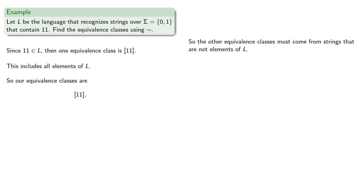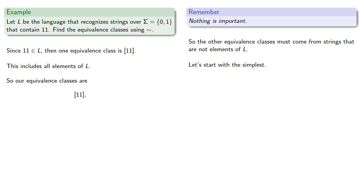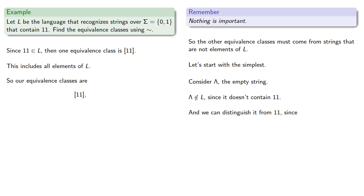So the other equivalence classes must come from strings that are not elements of L. Let's start with the simplest — the empty string. The empty string is definitely not in our language because it doesn't contain 11. And we can distinguish it from 11 because if we append the empty string, we still have something not in the language, but 11 concatenated with empty is in the language. So there's an equivalence class generated by the empty string.